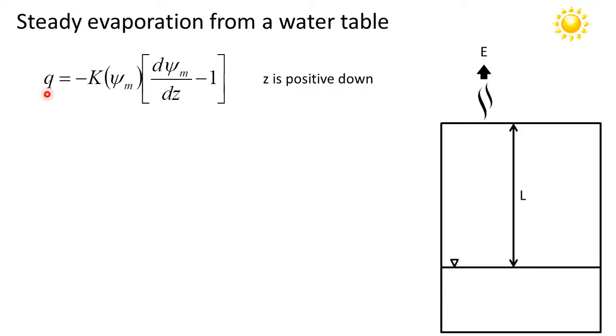So q here is a soil water flux which is equal to negative hydraulic conductivity K, which is a function of ψ_m the matrix potential of the soil, multiplied by the hydraulic gradient which consists of the gradient in the matrix potential dψ_m/dz minus 1 for the gradient in gravitational potential. In this case I've defined z as being positive downward.